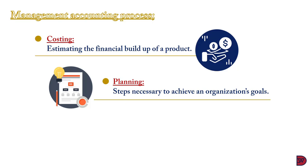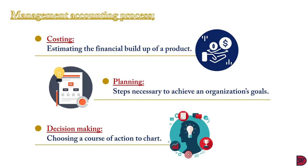For example, management accounting can help plan how many staff will be required in the marketing department for that particular year. Thirdly, decision making — management accounting helps choose the best out of the steps in the planning stage to implement to achieve a business's goal, such as deciding which market to venture into or what selling price to charge for a new product.